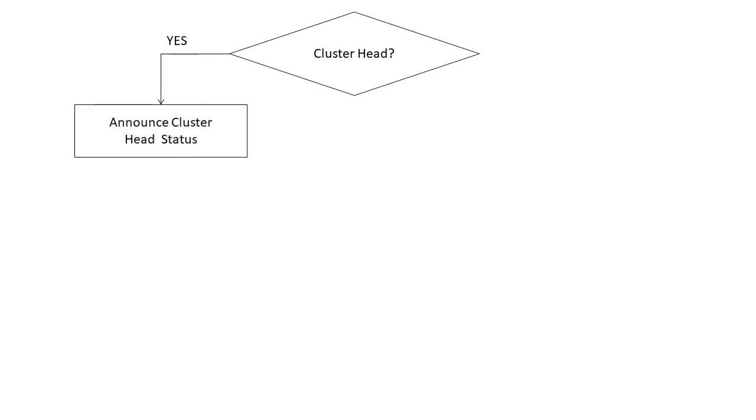Here is the flowchart of LEACH protocol. First, the cluster head election is announced. Based on signal strength, cluster head is elected. The other sensor nodes wait for another cluster head announcement. Once cluster head is selected, cluster head announces its status and waits for joint request messages from other sensor nodes.